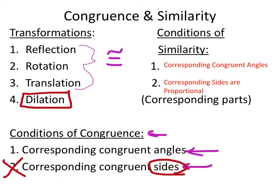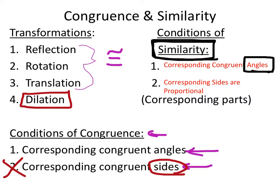On the other hand, we have similarity, and this is important because this is what we're going to be talking about today. For similarity, all corresponding angles have to be the same. The only thing is the sides have to be proportional. Corresponding sides are proportional for similarity, but for congruence they have to not only be proportional — they have to be the same length as well.